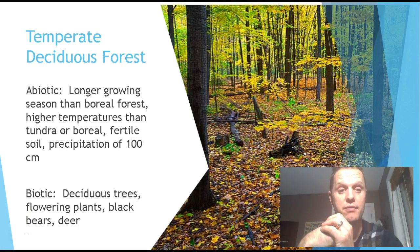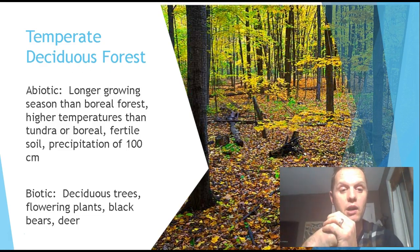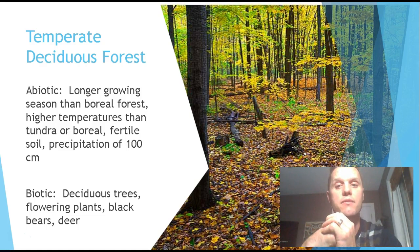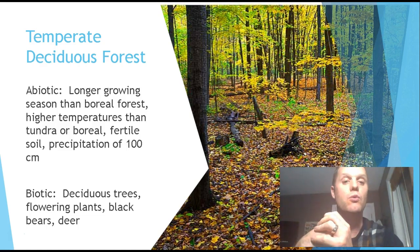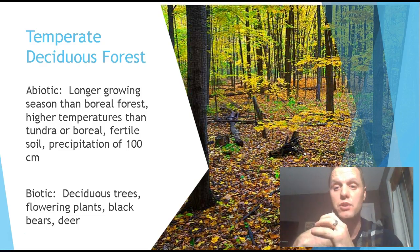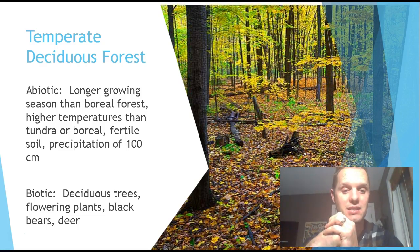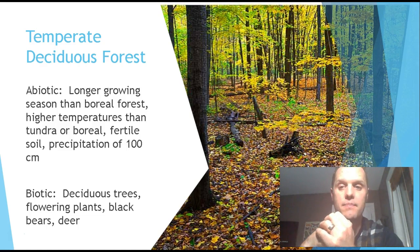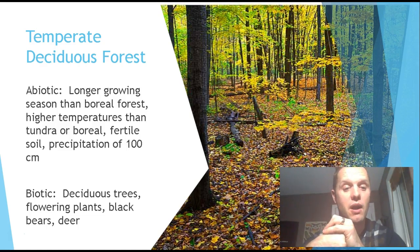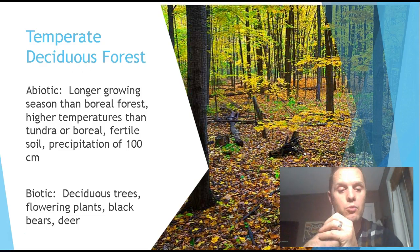We live in the temperate deciduous forest biome. The abiotic features include a longer growing season than the boreal forest, which means deciduous trees can grow here — it makes sense to grow wide, broad leaves like those of a maple tree. It wouldn't make sense for a maple tree to grow in the north because the growing season isn't long enough. The higher temperatures, fertile soil, and slightly higher precipitation all support deciduous trees in this area. Animals here include black bears, deer, and there are also deciduous trees and flowering plants.